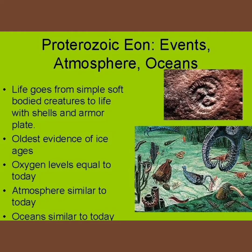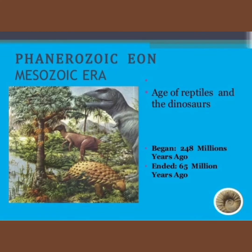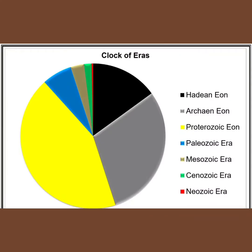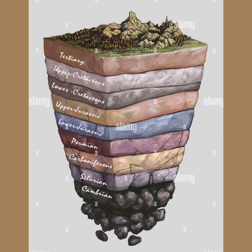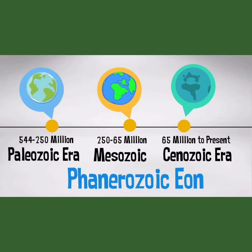The Eons of geological time are subdivided into Eras, which are the second longest units of geological time. Eras are defined based on the fossil life forms found in the rock layers and the law of superposition. The Hadean, Archean, and Proterozoic Eons do not have recognized Eras. The Phanerozoic Eon spans about 541 million years from the end of the Proterozoic to the present and is called the Eon of Visible Life. It is divided into three major spans of time or Eras based on characteristic assemblages of life forms.